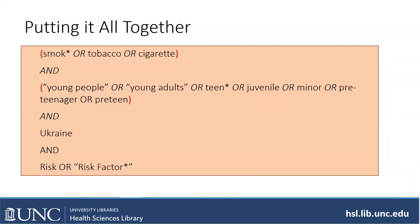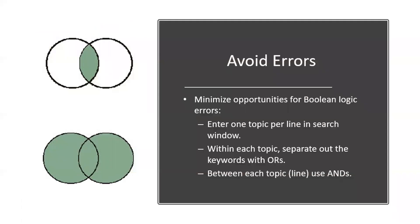Putting it all together, after doing much research, you'll see all the smoking terms up top, then AND, then the young people terms, and Ukraine. The last concept — risk or risk factor — also needs parentheses. In order to avoid errors, rather than doing one huge nested search, we put each subtopic in its own line in the database and then combine them. Within each topic, separate keywords with ORs, and between each line use ANDs.